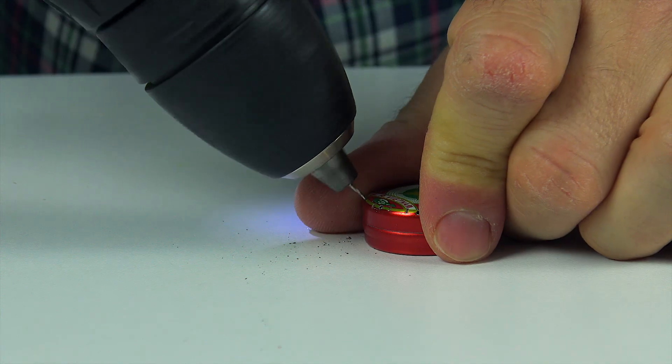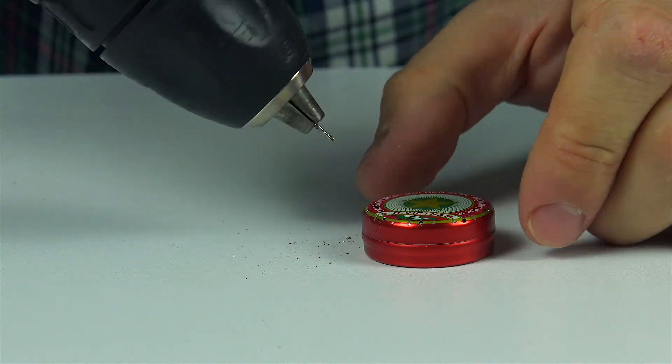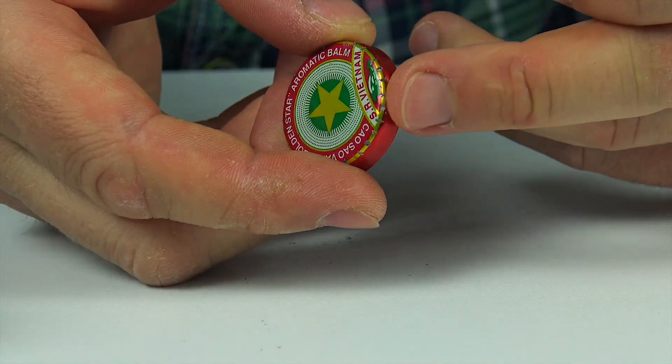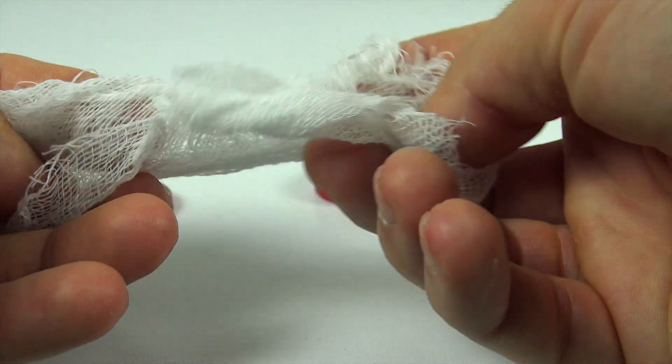Grab a super-thin drill bit, around one millimeter, and carefully make small holes all around the lid. The more precise you are, the cooler the flame will look.